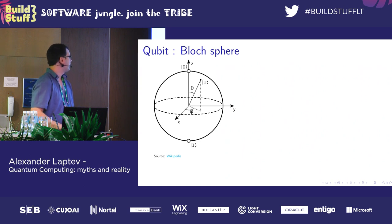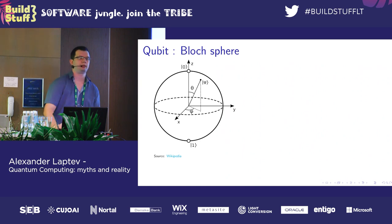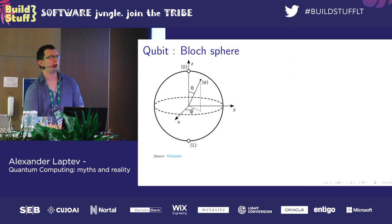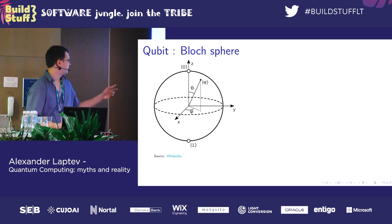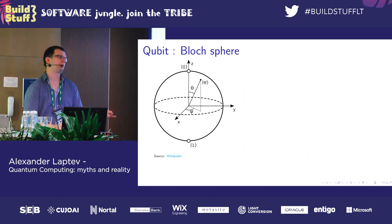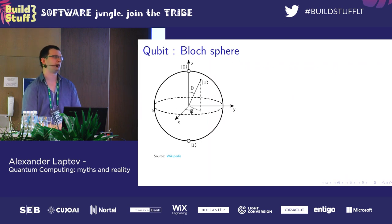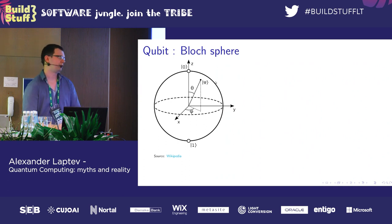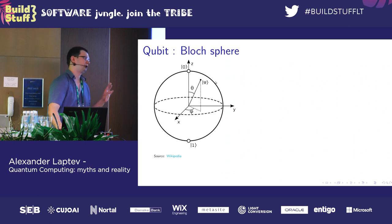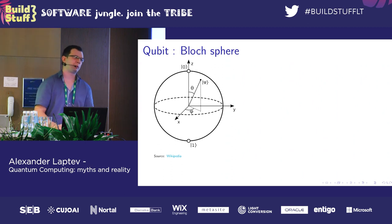For instance, if we have a state somewhere on the equator, we can take 100 qubits, set them into this state, measure all of them, and we will get roughly 50 zeros and 50 ones — or maybe 49 and 51. In fact, even here we can extract some value because we already have a source of randomness.